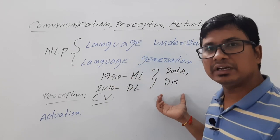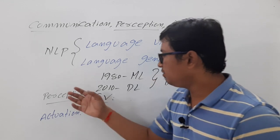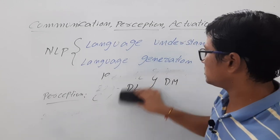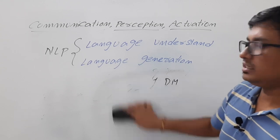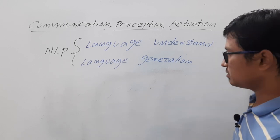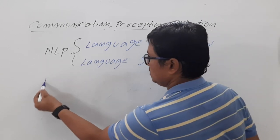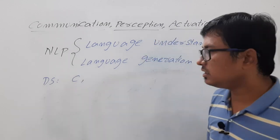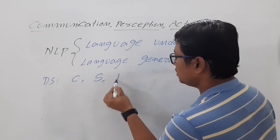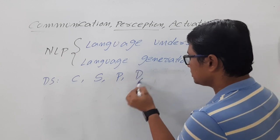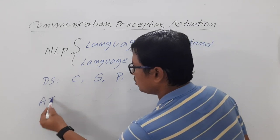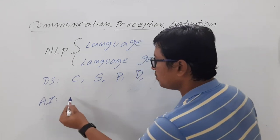Now, the tasks involved in data science are: data collection, data storing, data processing, data describing, and modeling of data. Let me write them in shortcut: collecting (C), storing (S), processing, describing, and modeling. Now coming to the tasks involved in artificial intelligence: problem solving, knowledge representation and reasoning, decision making, and communication, perception, and actuation.